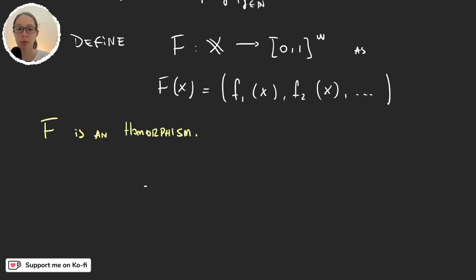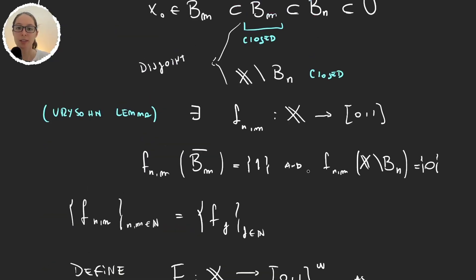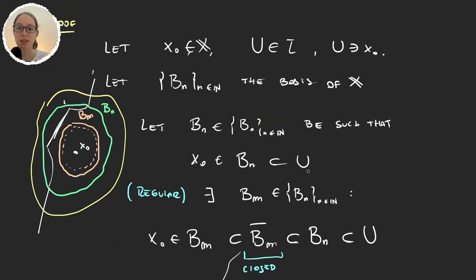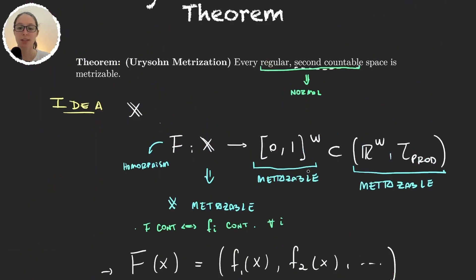Because f is a homeomorphism onto its image f(X) ⊆ [0,1]^ω, and [0,1]^ω is metrizable with the product topology, X is metrizable. This finishes the proof of Urysohn's Metrization Theorem.